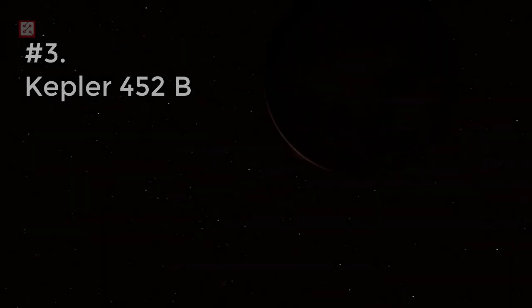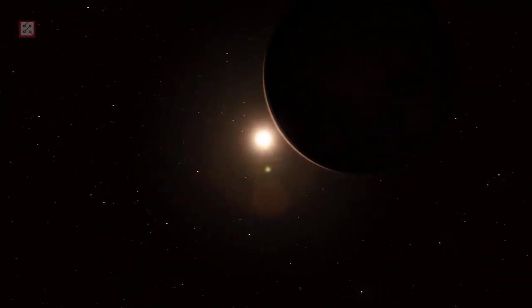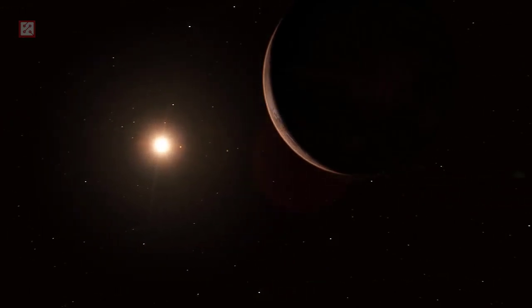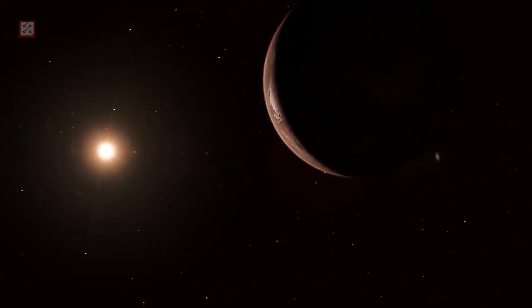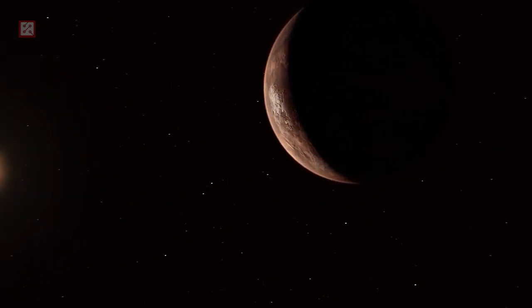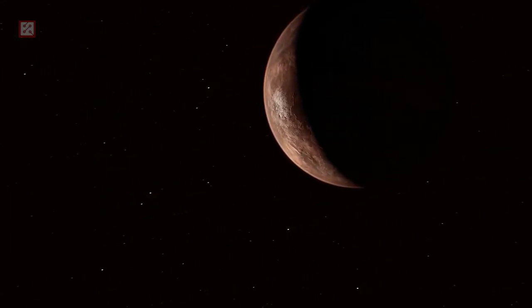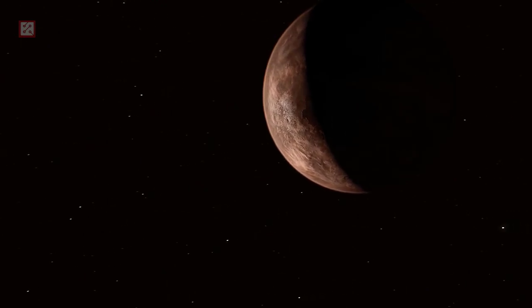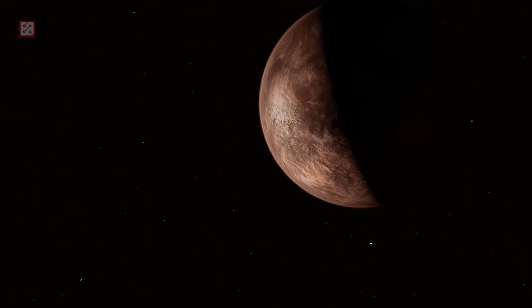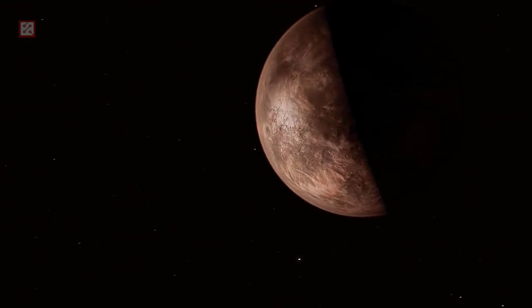Number 3: Kepler-452 b. Kepler-452 b is an exoplanet sometimes quoted to be Earth's cousin, which is orbiting a Sun-like star, Kepler-452, about 1,402 light-years away from Earth in the constellation Cygnus. It was found by NASA's Kepler Space Telescope in July 2015, and it was observed that the planet is orbiting in the habitable zone of the host star.